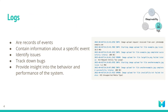The first type of data we'll look at is logs. Logs are records of events or messages a software application or system generates. They are typically very detailed and provide information about a specific event or action within a software system. Information contained in logs includes timestamps, message content, severity level, and other contextual information.